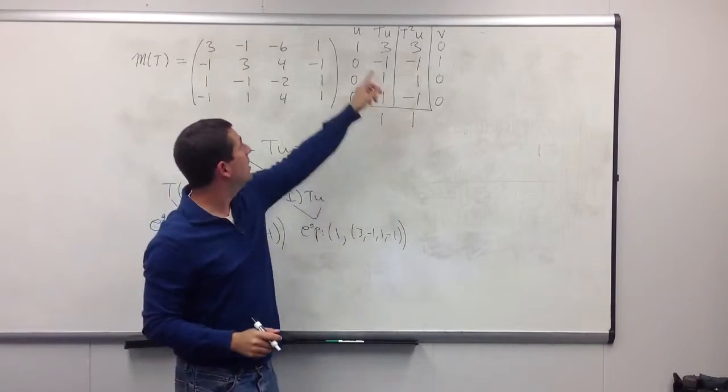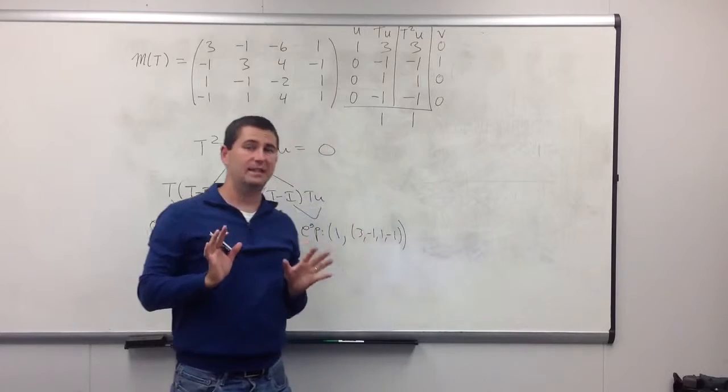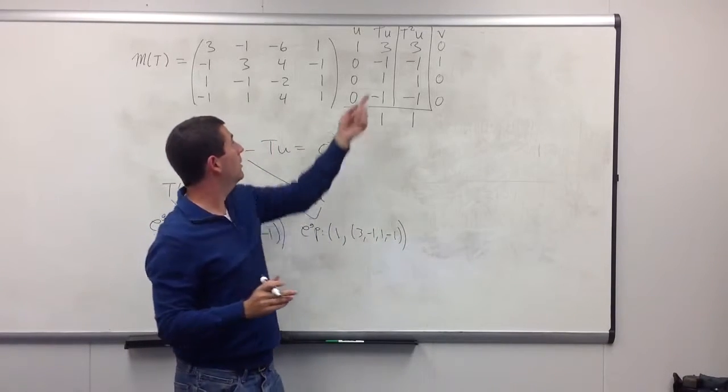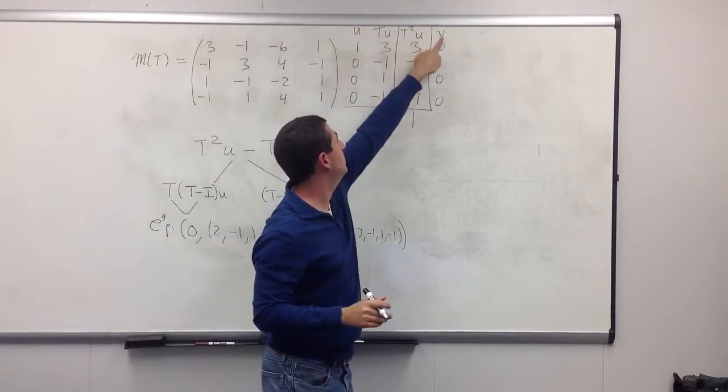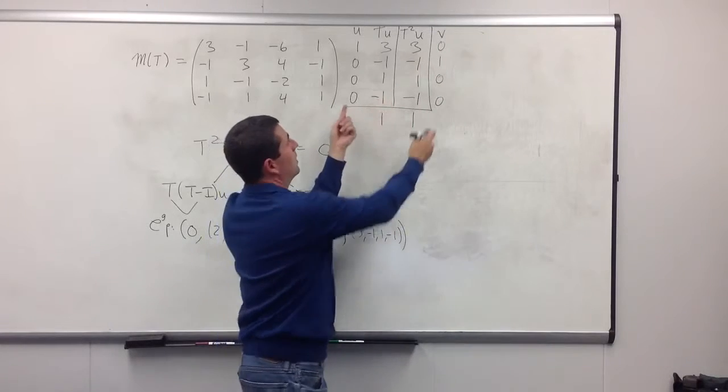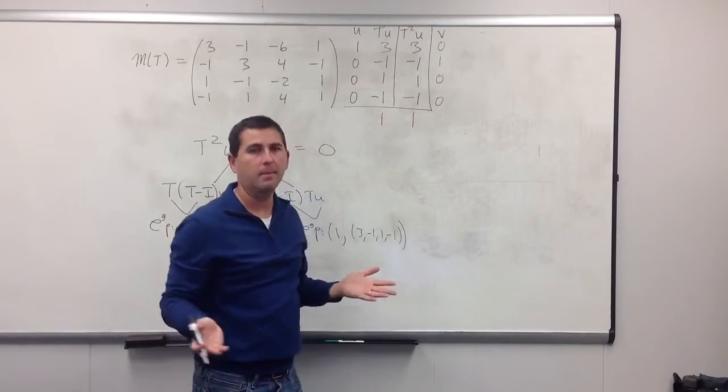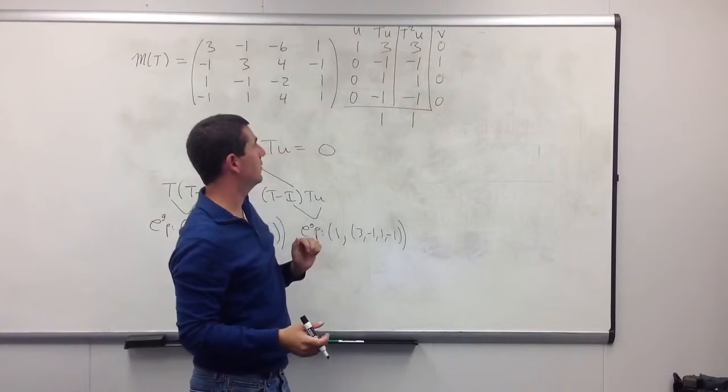So, I'm going to take here the next easiest vector to start with, 0, 1, 0, 0. And you can see that u, Tu, and v cannot be linearly dependent. Because if they were, then Tu would be a linear combination of u and v. And how are you going to get a minus 1 from two zeros? Ain't going to happen. So we have a linearly independent list so far.